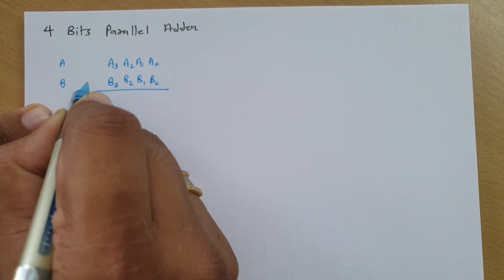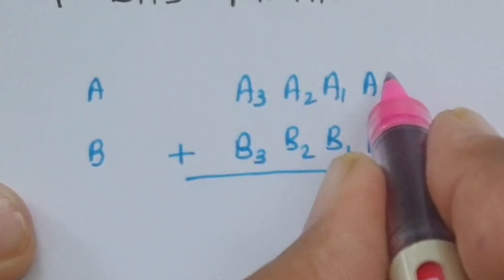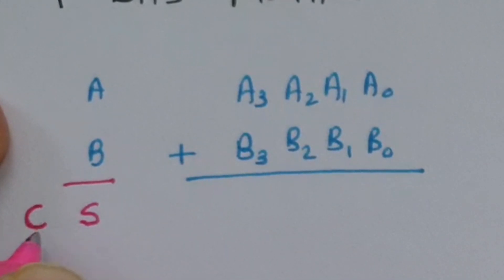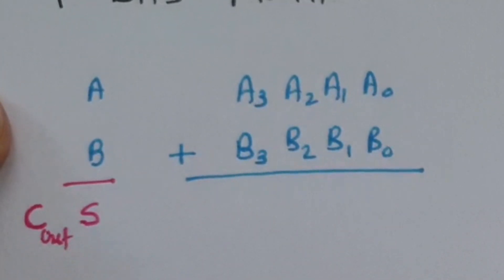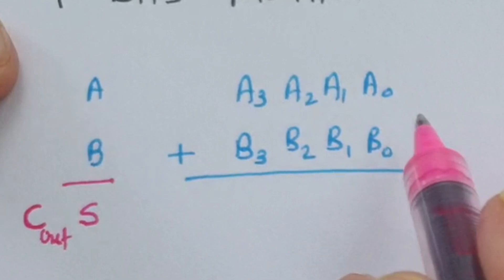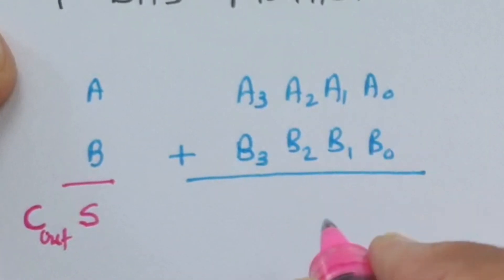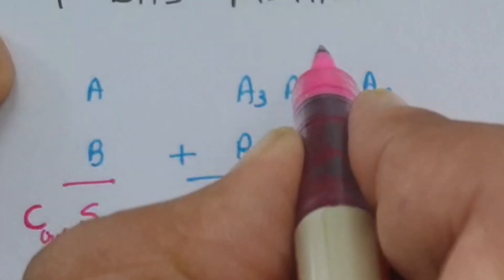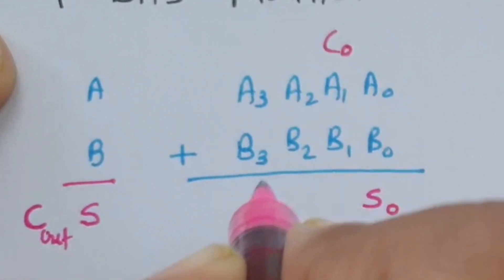Here we are dealing with performing an addition operation. When you perform addition of these two, we have sum S and carry C out. A0 and B0 will be added bitwise — that generates S0 and provides one carry. The carry of A0 and B0 is what we will be adding in the next addition.